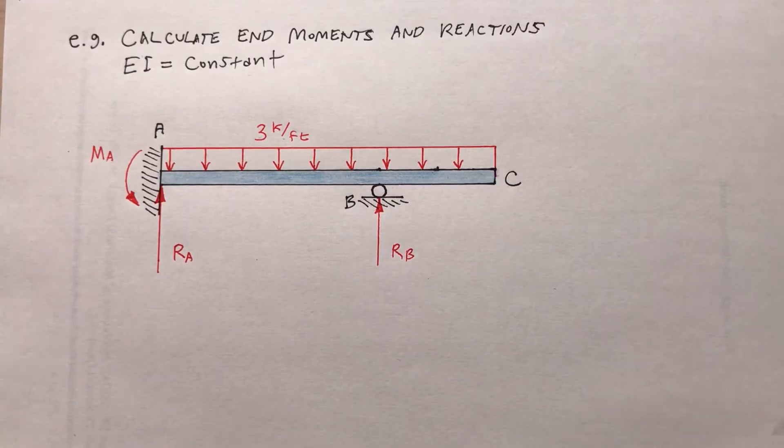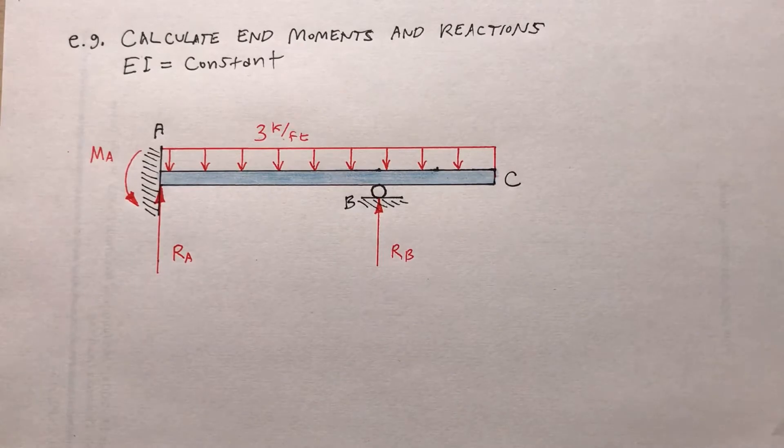So an example involving an overhang. This is actually not even an indeterminate beam, so I could use techniques from statics to solve it, but I want to demonstrate the moment distribution method.